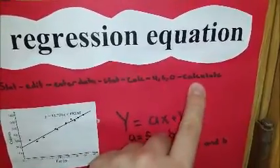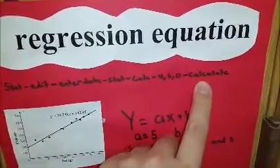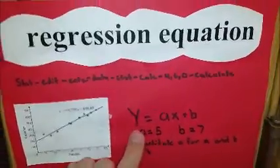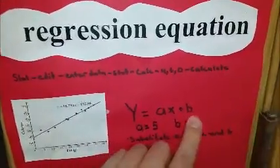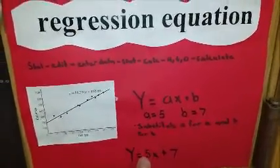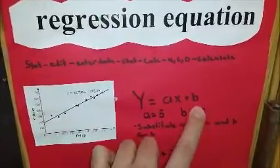Then we hit calculate. Once we have calculate, you're going to have this on your screen and the answer everywhere you see an a you put a five, everywhere you see a b you put a seven for this specific example.